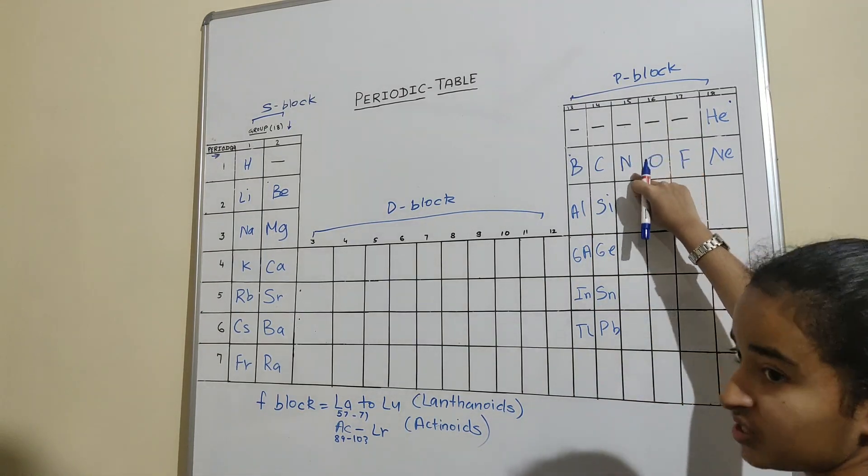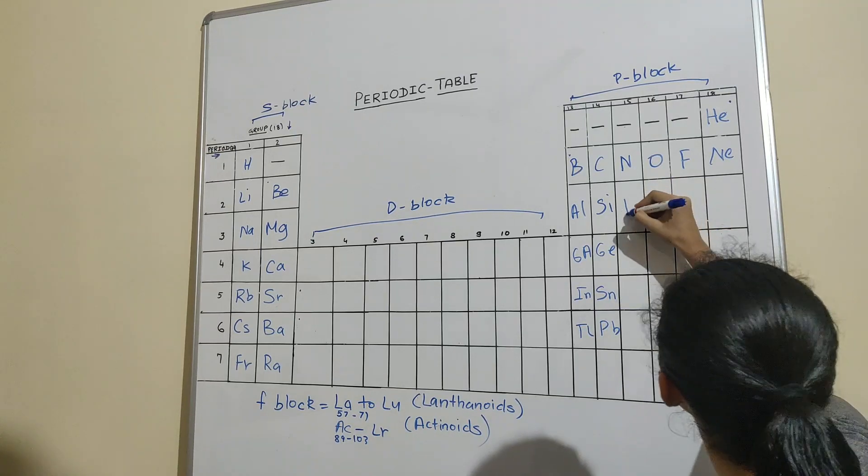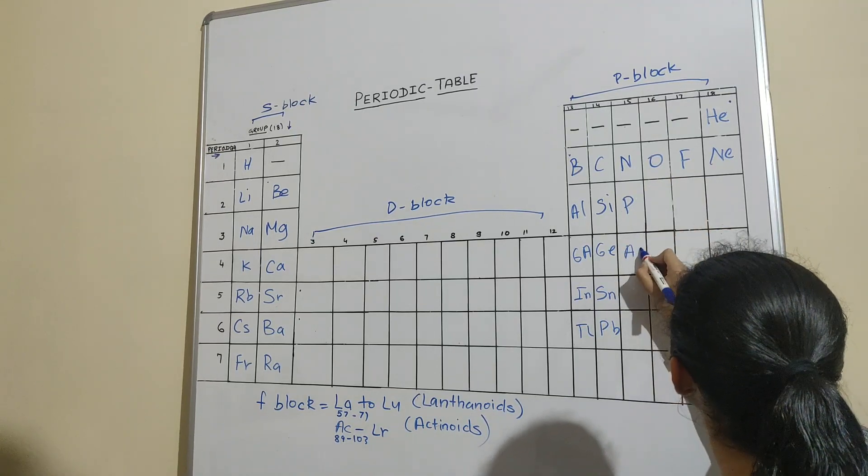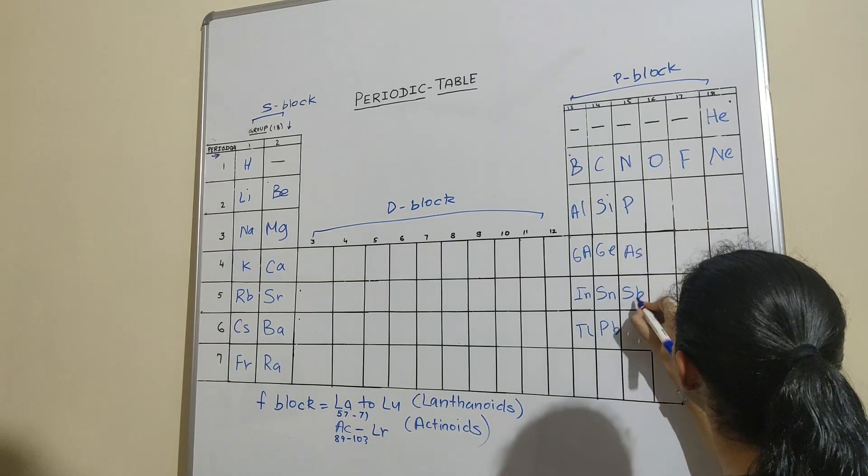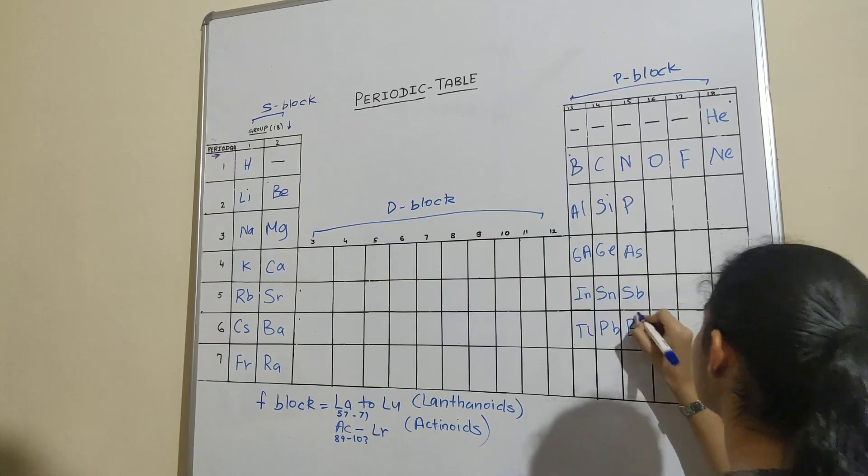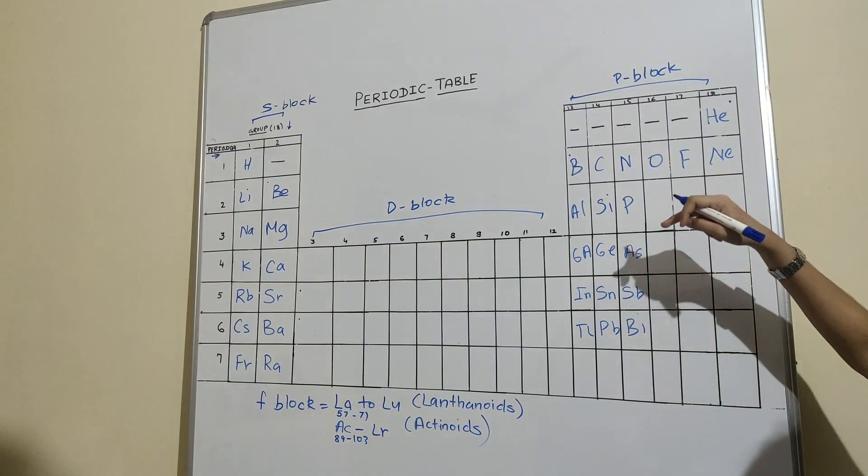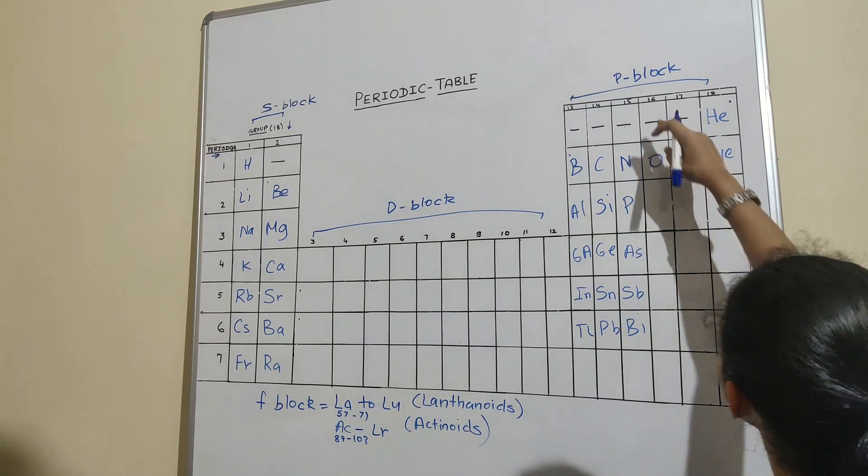Now next is with the fifteenth group, starts with the Nitrogen, that is: Na-Na-Parti-Kar-Ashwarya-Sabbi-Gre. Nitrogen, Phosphorus, Arsenic.